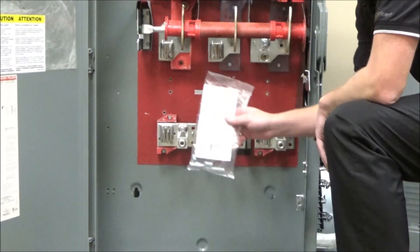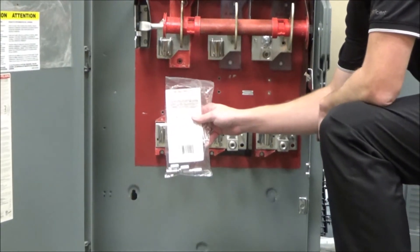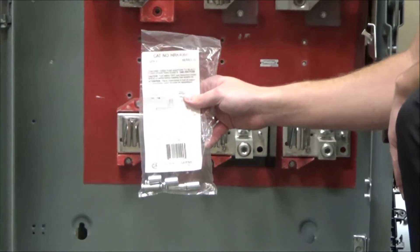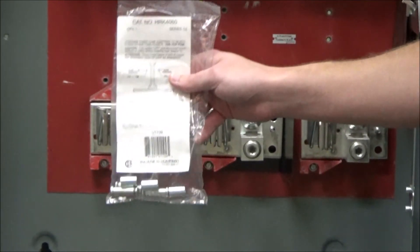In this video we'll be showing you how to install the HRK4060 class R fuse kit into a 400 amp heavy-duty safety switch.